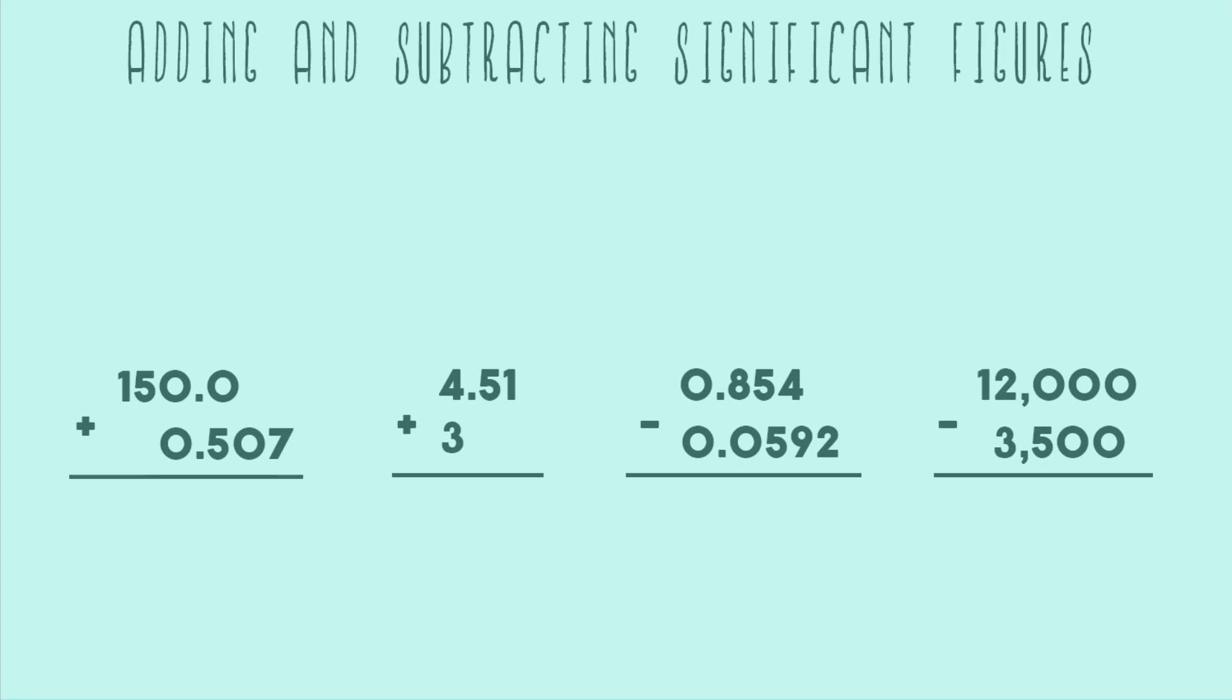All right, let's talk about adding and subtracting significant figures. Once you've learned how to assign how many sig figs any given number has, the next step is to start using those sig figs in calculations. We basically have two different rules: the rules for addition and subtraction, and the rules for multiplication and division. In this video, we'll just be going over the addition and subtraction rules.